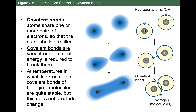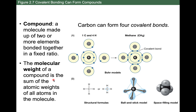Covalent bonds are strong bonds, meaning once that bond is formed, you would have to put in a fair amount of energy to break them — to pull those atoms apart. You could have an enzyme that breaks that bond, or you could just heat things up. But at the temperatures at which you find most living cells on Earth, covalent bonds tend to be very stable. That doesn't mean they can't be broken or can't change, but they are strong, stable bonds.